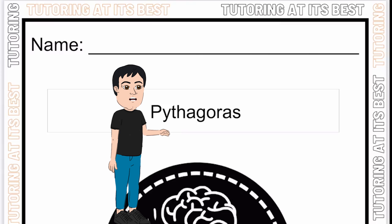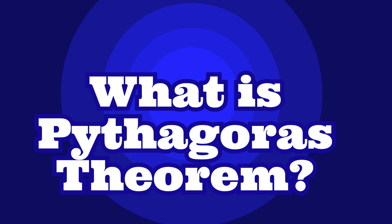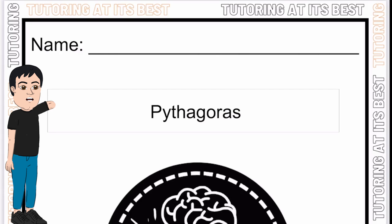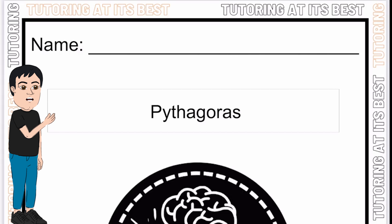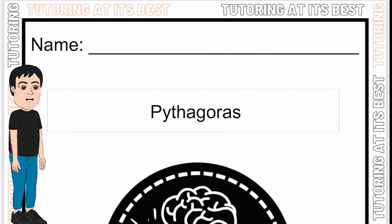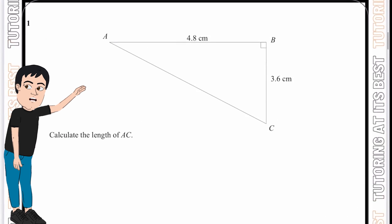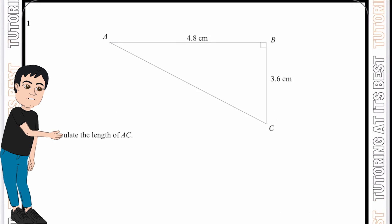Hey guys, it's Rishi once again, and today we're back with Pythagoras' theorem. Pythagoras was a Greek philosopher who made important developments in mathematics, astronomy, and theory of music. The theorem now known as Pythagoras' theorem was known to humans a thousand years earlier, but he may have been the first to prove it. In today's video I'm going to go through all the different types of Pythagoras questions, following through with the formula in a short and easy way.